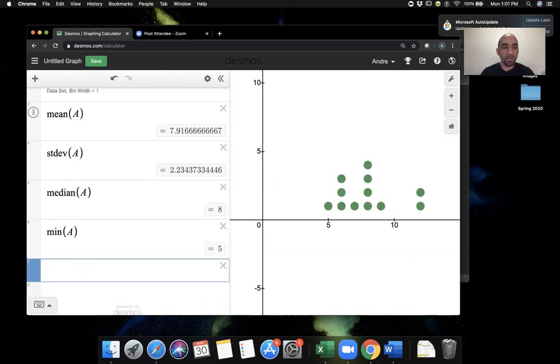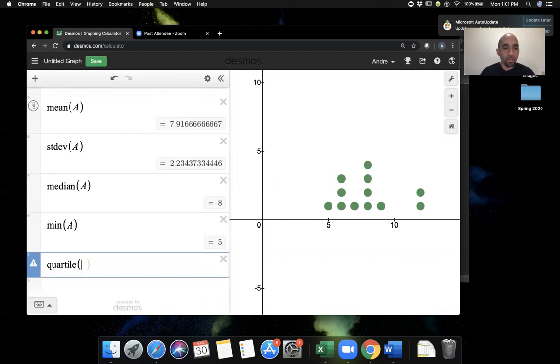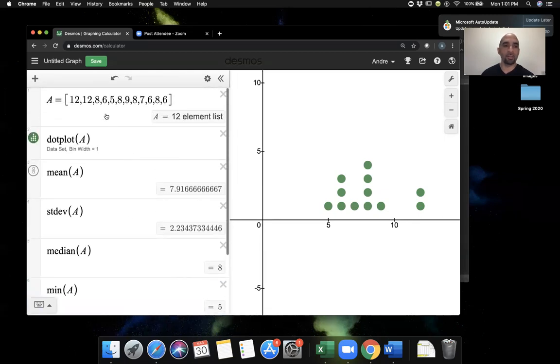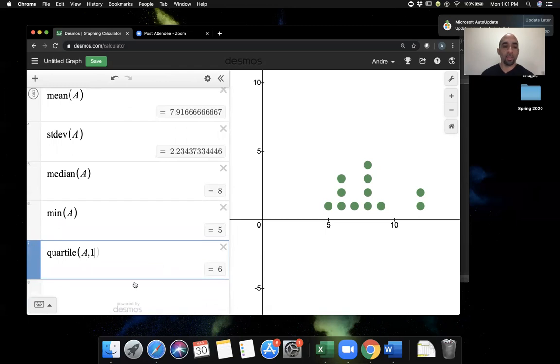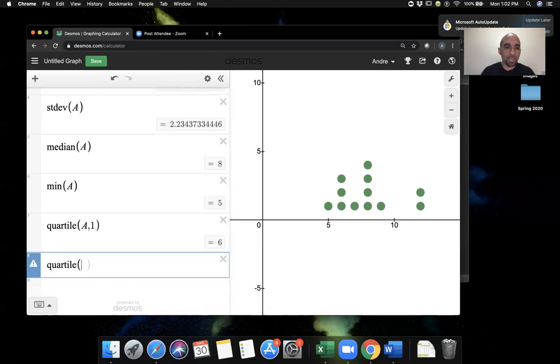I'll find the first quartile. To find the quartiles, you do 'quartile', then you enter in the list, and then you enter the quartile that you want to find. I want to find the first quartile, so I'll do A comma 1. This is basically saying that the first quartile of list A, the data set in this list, the first quartile is six. To find the second quartile, we can do either the median or we can do quartile A comma 2. Either way, it's the same thing. The second quartile is the same as the median—it's the position which separates the data set into two halves. So the median or the second quartile is eight.